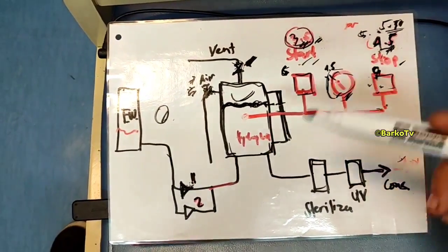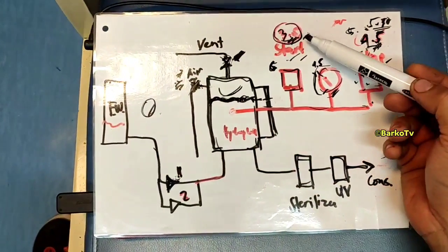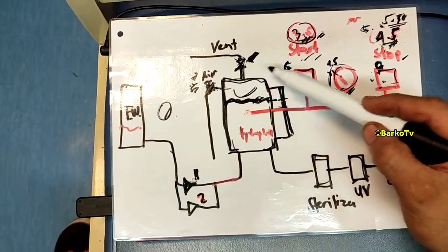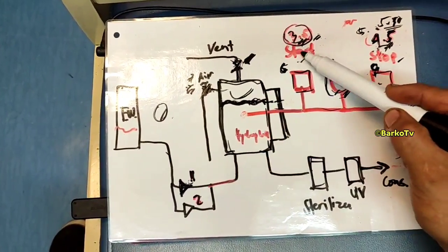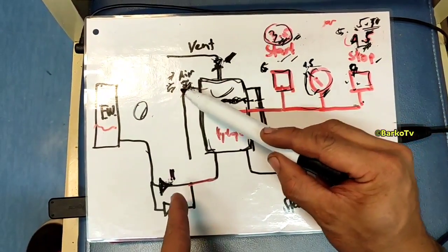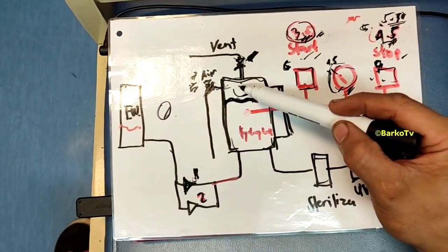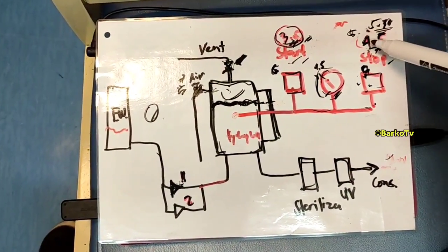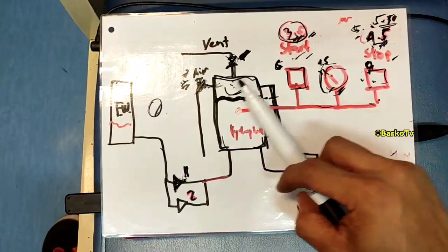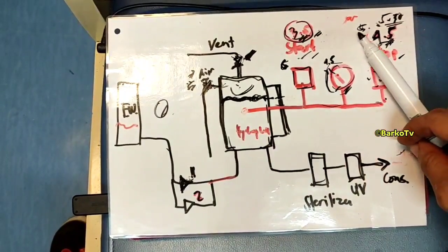Turn counterclockwise — half turn — to decrease the stop setting. After that, vent again so the pump starts at 3.5 bar. Then close the vent and open the air valve to fill the tank and build pressure up to the new setting. Continue feeding air into the tank until it reaches 4.5 bar, then check the new stop setting.